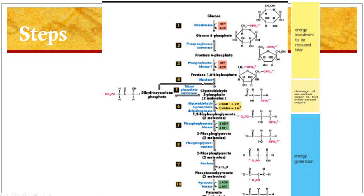In the fourth step, fructose-1,6-bisphosphate, a 6-carbon compound, is split into 2 three-carbon units: the first is glyceraldehyde-3-phosphate and the second is dihydroxyacetone phosphate. Since the reverse reaction is an aldol condensation, the enzyme that catalyzes this reaction is known as aldolase. This reaction is also reversible.